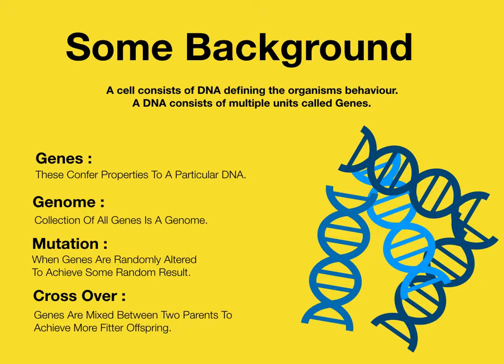Now we need a little background in biology. A cell is the basic unit of an organism and it contains DNA which defines the cell and the cell defines the organism. Genes are the small units that define the DNA — it is the combination of genes that makes the DNA represent a cell's functions and characteristics. A collection of all genes is called a genome, meaning if we take the gene for hair color, the gene for height, and the gene for eye color together, that's called a genome.